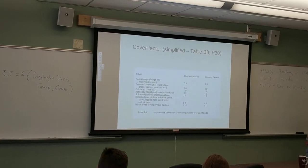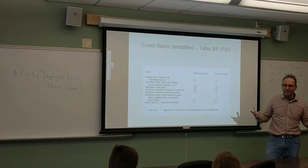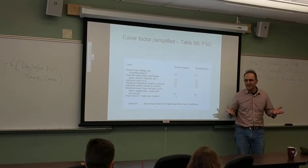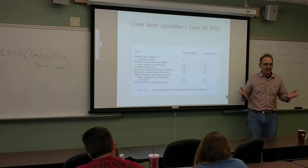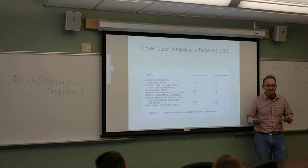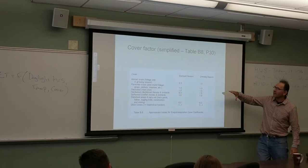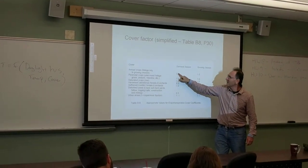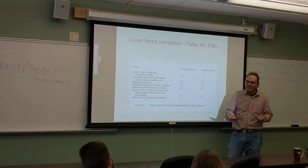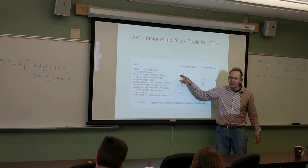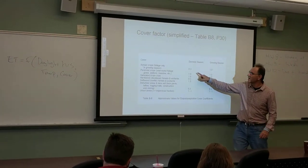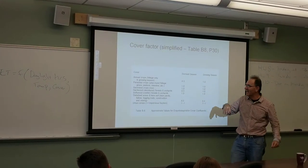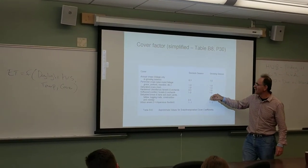This is a fairly crude approach, but useful if you're trying to get a handle on your evapotranspiration. I was an expert witness once — an expert is someone from more than 50 miles away with a briefcase, or alternatively an X is a has-been and a spurt is a drip under pressure. Looking at cover factors: for annual crops in the dormant season it's down to 0.3 — there might be some weeds like chickweed growing — whereas in the growing season once the plant canopies, the cover factor is higher. The range is pretty much 0.3 to 1.